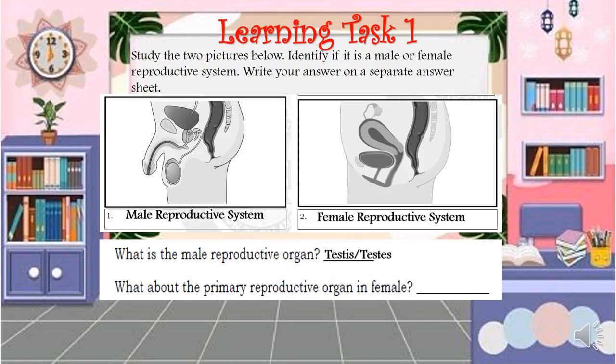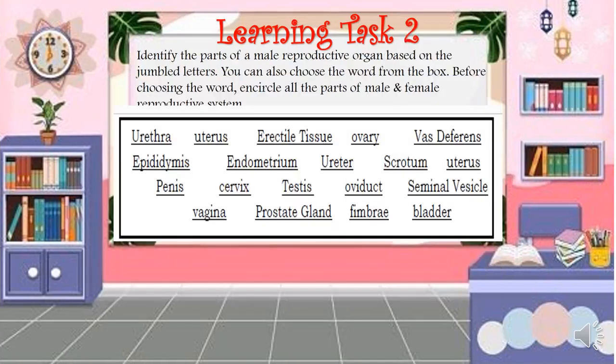What is the primary reproductive organ of the male? That would be the testes. And the primary reproductive organ in the female is the ovary, or ovaries.